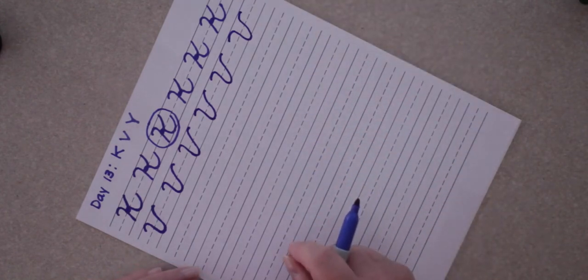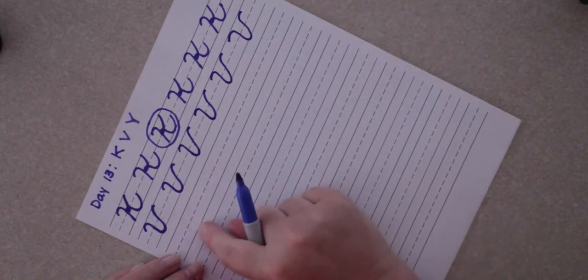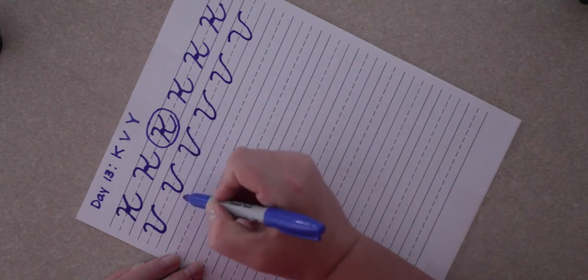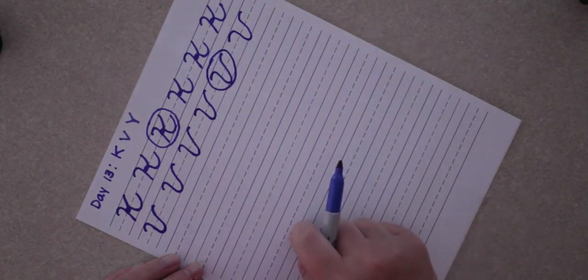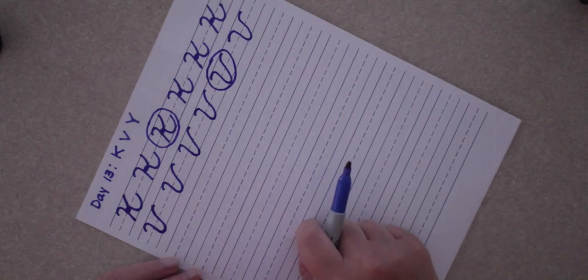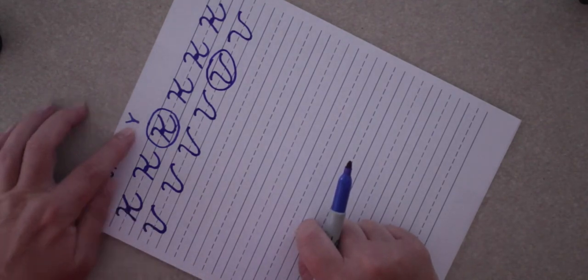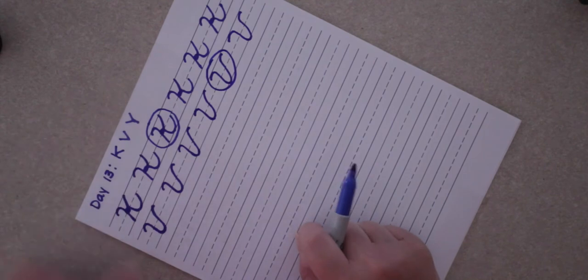Once you finish your row, you can pause and finish your row of V, then find which one you think is your best and circle it. Let's move on to capital Y.